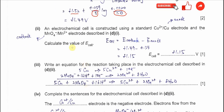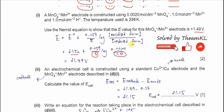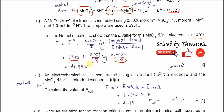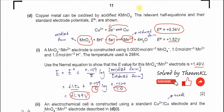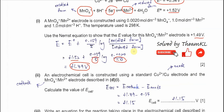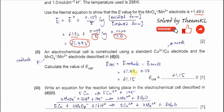Part 2: An electrochemical cell is constructed using the standard Cu²⁺/Cu electrode and the manganese electrode from part D. Comparing the potentials: the manganese electrode is +1.49 V and the Cu²⁺/Cu half-cell is +0.34 V. The copper electrode is more likely to undergo oxidation, releasing electrons, while the manganese half-cell gains those electrons. Therefore, copper is the anode (oxidation) and the manganese electrode is the cathode (reduction). The E_cell = 1.49 − 0.34 = +1.15 V.